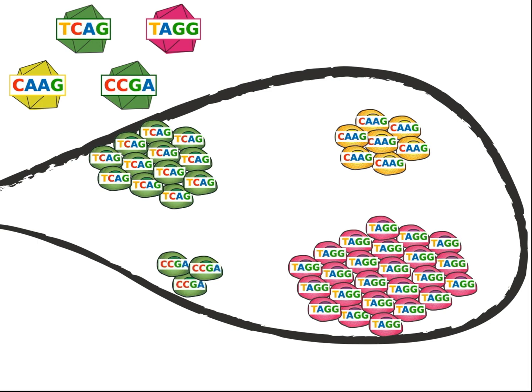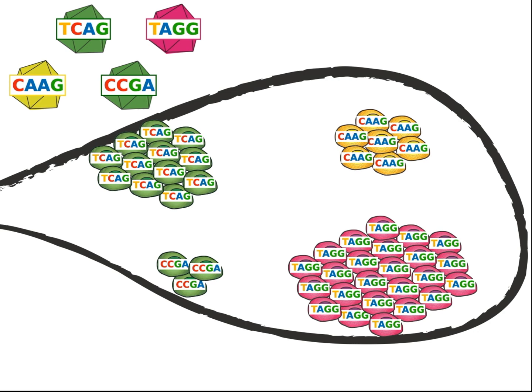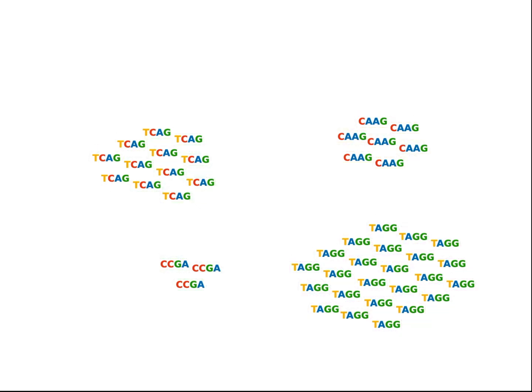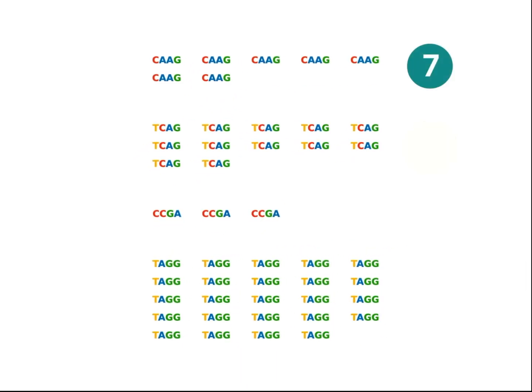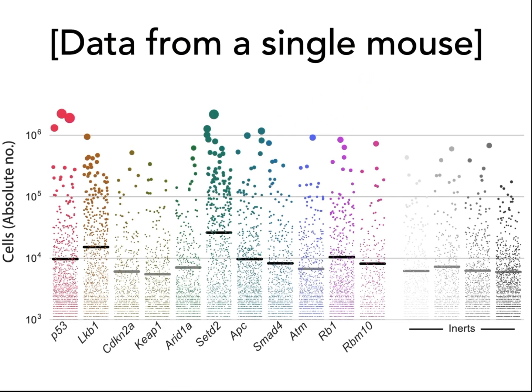The barcodes also allow us to measure the growth rate of each tumor. To do so, we dissect and homogenize the mouse's lung, isolate the barcodes through PCR amplification, and then count the number of barcodes corresponding to each tumor using next-generation DNA sequencing. This allowed us to quantify tumor growth in an animal model with unprecedented statistical power and precision.